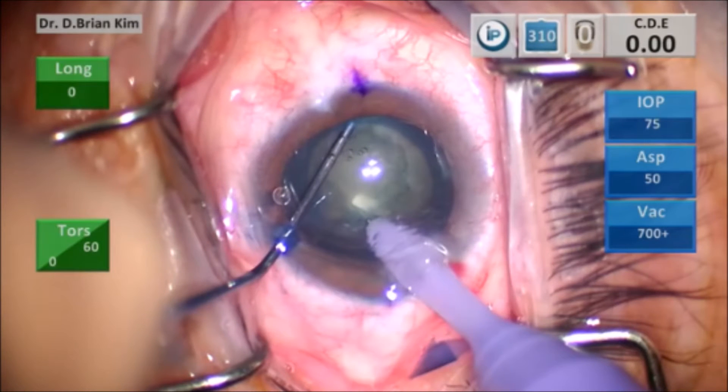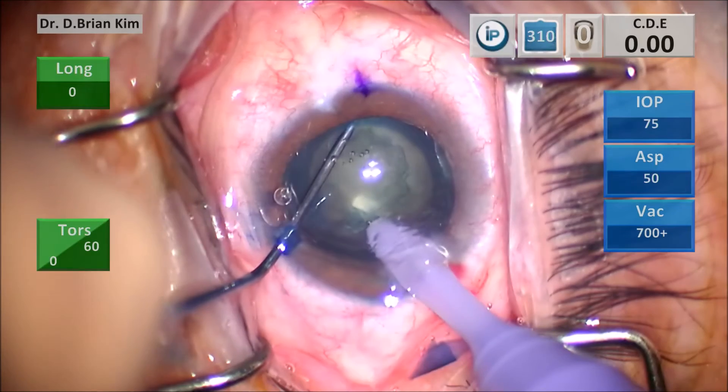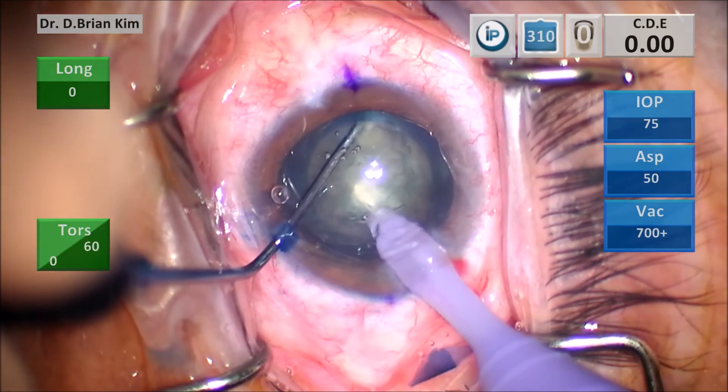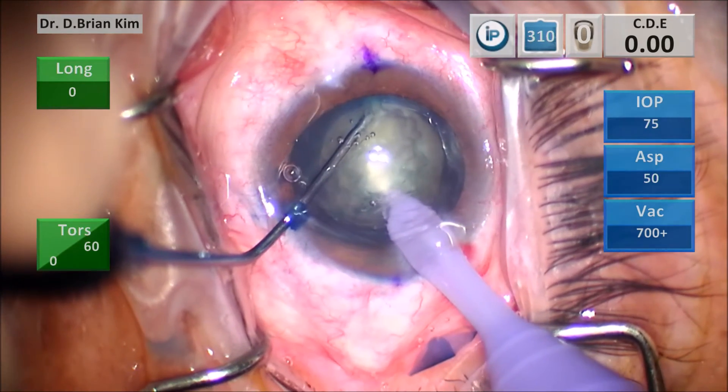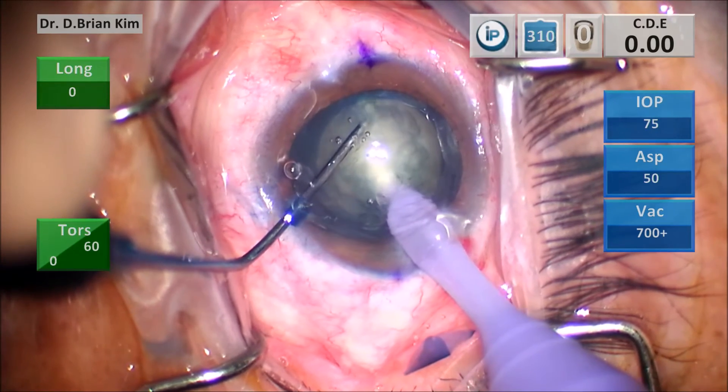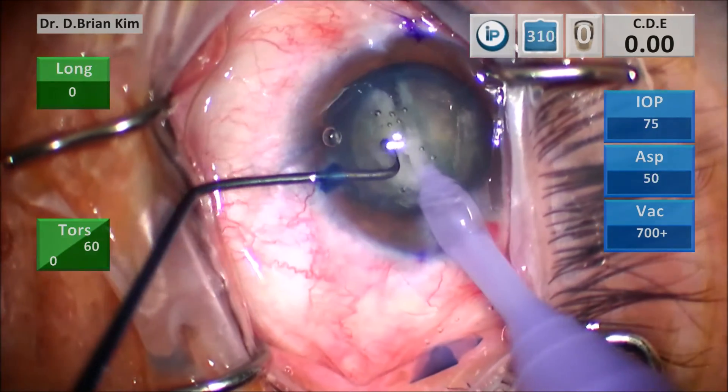So as you can see here, again, phaco tip is on the surface of the lens, but it's sub incisional. As I bring both instruments together in the middle, you see the whitening of the lens, and the lens is fractured.